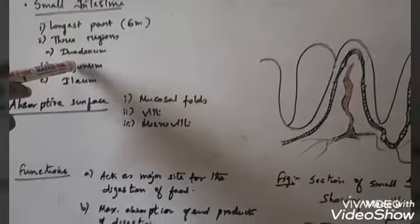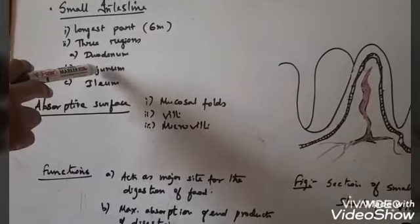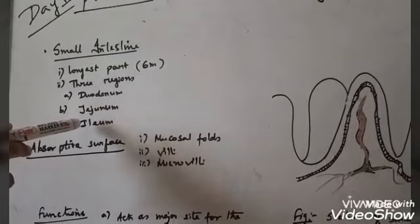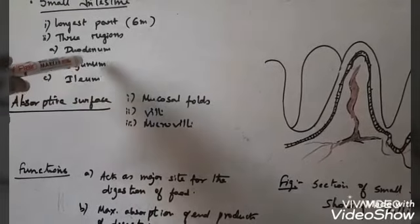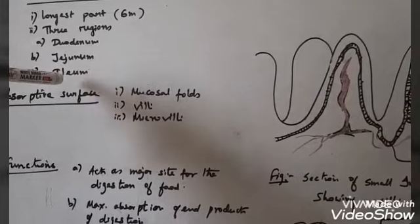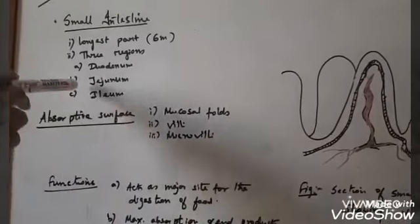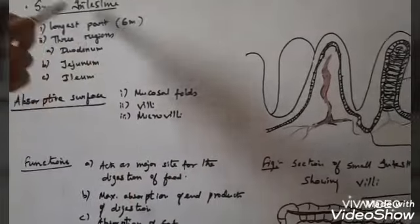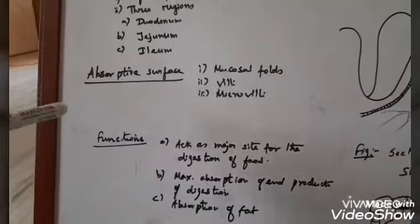The jejunum is the middle part of the small intestine, about 2.5 meters in length, and is a coiled structure. The ileum is a highly coiled structure and is the longest of the three regions of the small intestine. Finally, it opens into the large intestine on the right side of the abdomen.